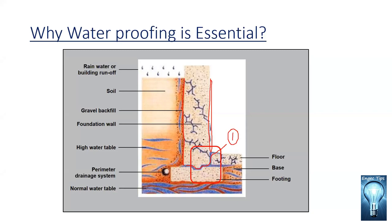The second way is water coming through structural pores and cracks. There are minor pores within the concrete structure, as well as cracks. When water comes in contact with the surface, it searches for a path to flow, and if it finds one, it passes through.